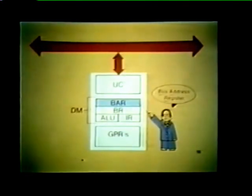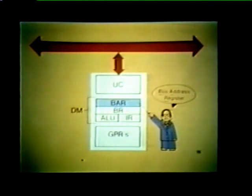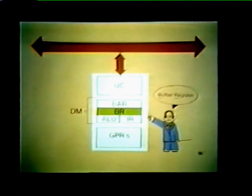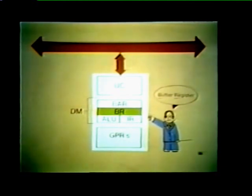In this study unit, we will further break down the data manipulation logic into four functional blocks. The bus address register, or BAR, provides temporary storage for all bus addresses used by the processor. The buffer register, or BR, serves as a temporary holding area for data. Data entering the processor and data leaving the processor passes through this BR.